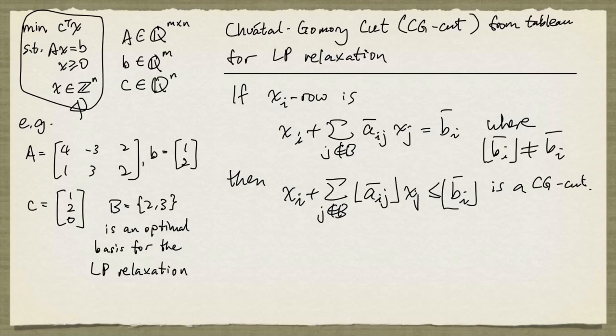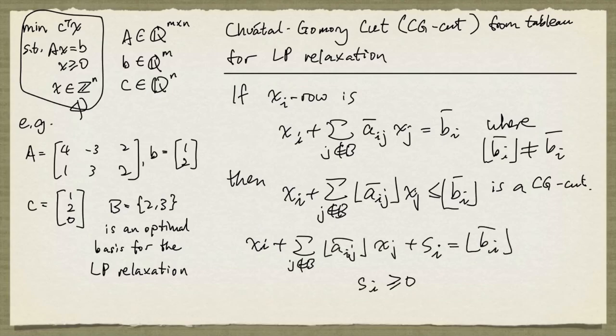Note that we can impose that the slack variable be an integer, because this part will be an integer for all integer values for x. And this is integer, so the slack can be taken to be an integer.